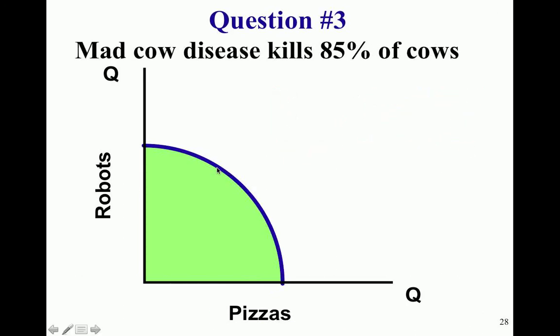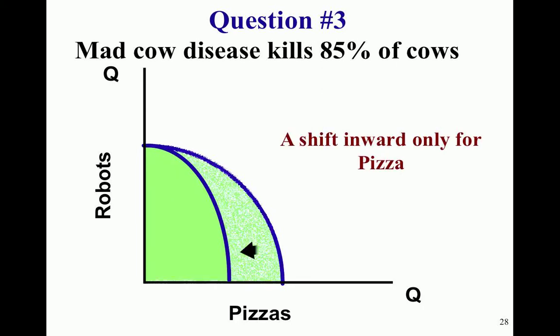Answer three — mad cow disease. You'll see a shift in for pizza. It doesn't take any cow product to make a robot, so mad cow disease killing cows doesn't directly impact our ability to produce robots. But it does greatly impact pizza because pizza is highly dependent upon cheese and perhaps other beef-based toppings.